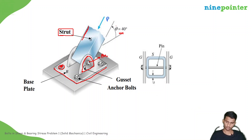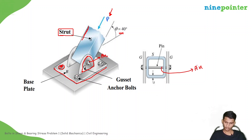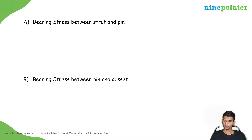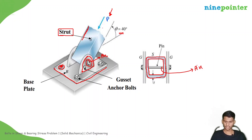If you see the top view from this side, it will look like this. This is the pin. And if you see over here, the cross-sectional shape of the strut is like this. And these are the gusset plates. Now let us move to the question. Load T is acting — compressive load P. So, bearing stress between strut and pin. The strut is this one, and this is the pin.